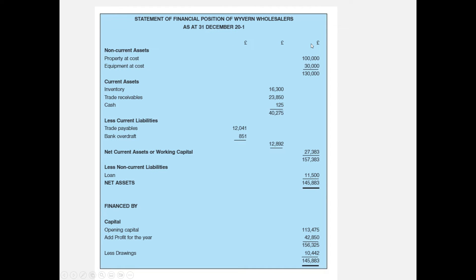The statement of financial position has three columns. Non-current assets — property and equipment — go in the top right. Current assets minus current liabilities gives us net current assets, also known as working capital. In this case, current assets of $40,275 minus current liabilities of $12,892 gives net current assets of $27,383, which is a positive and healthy position.